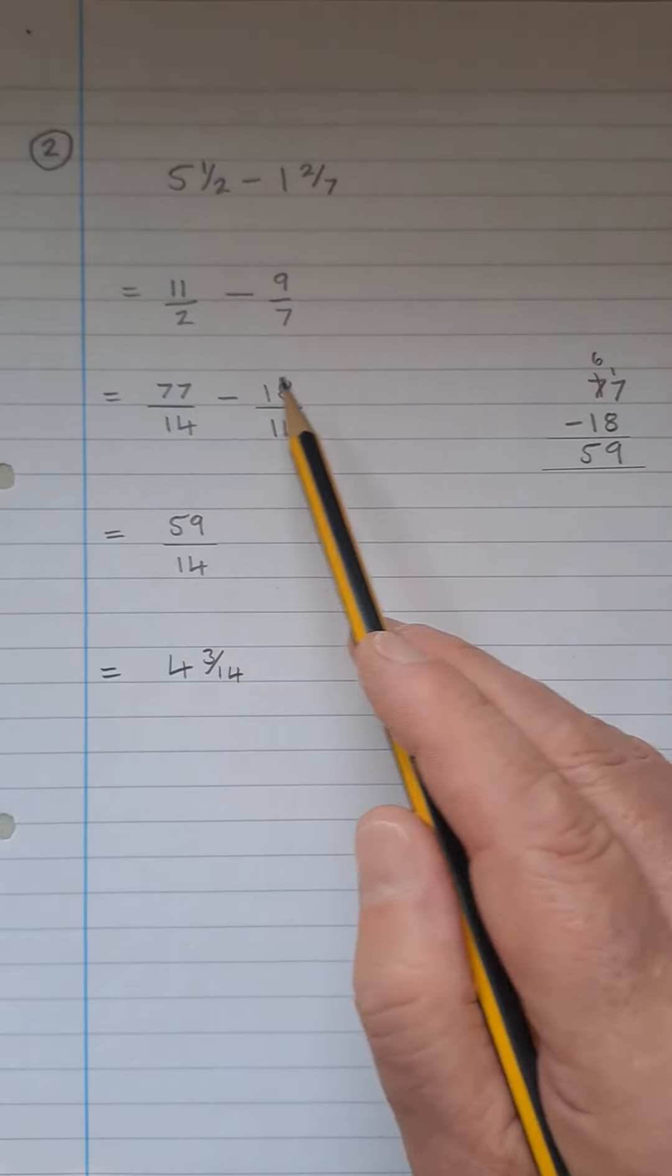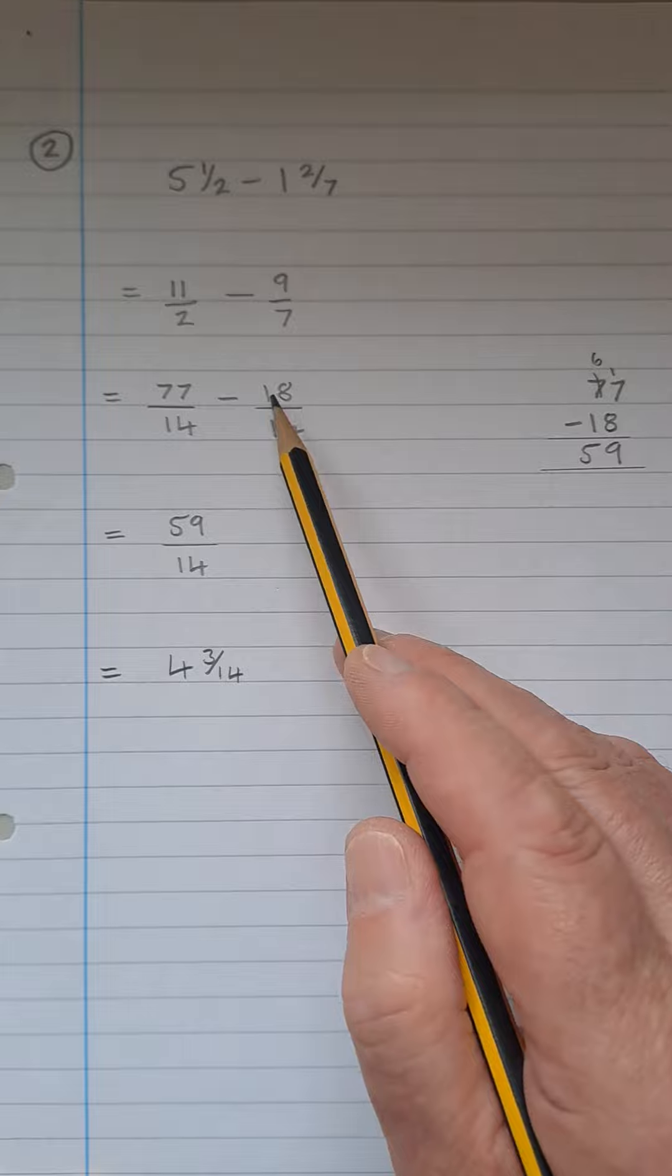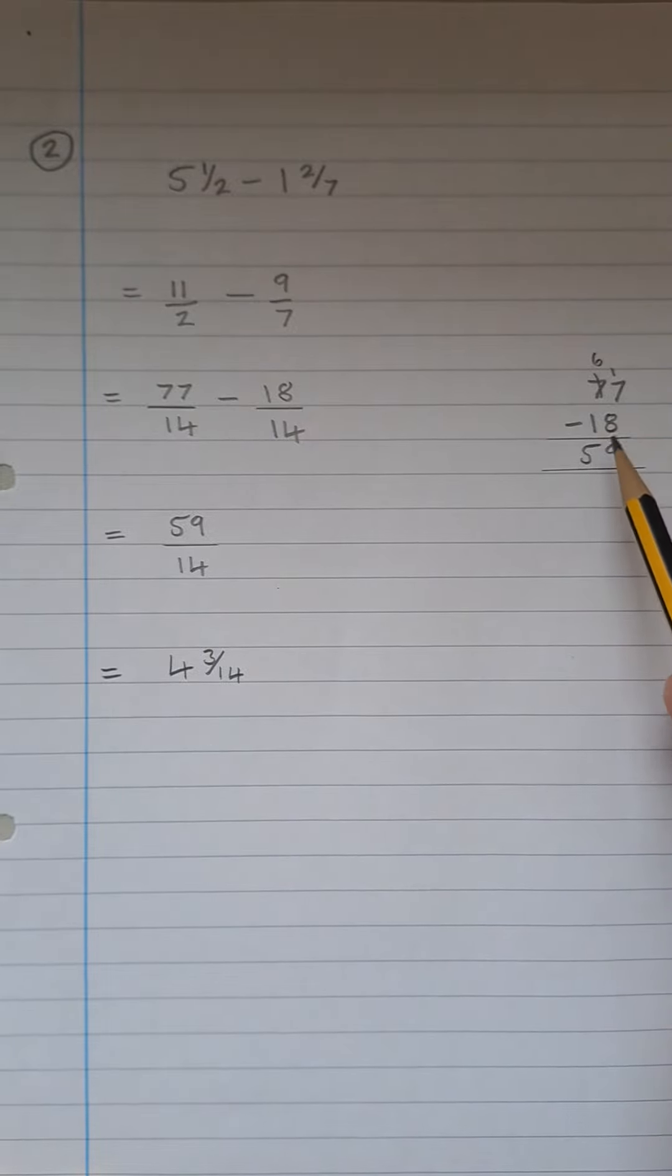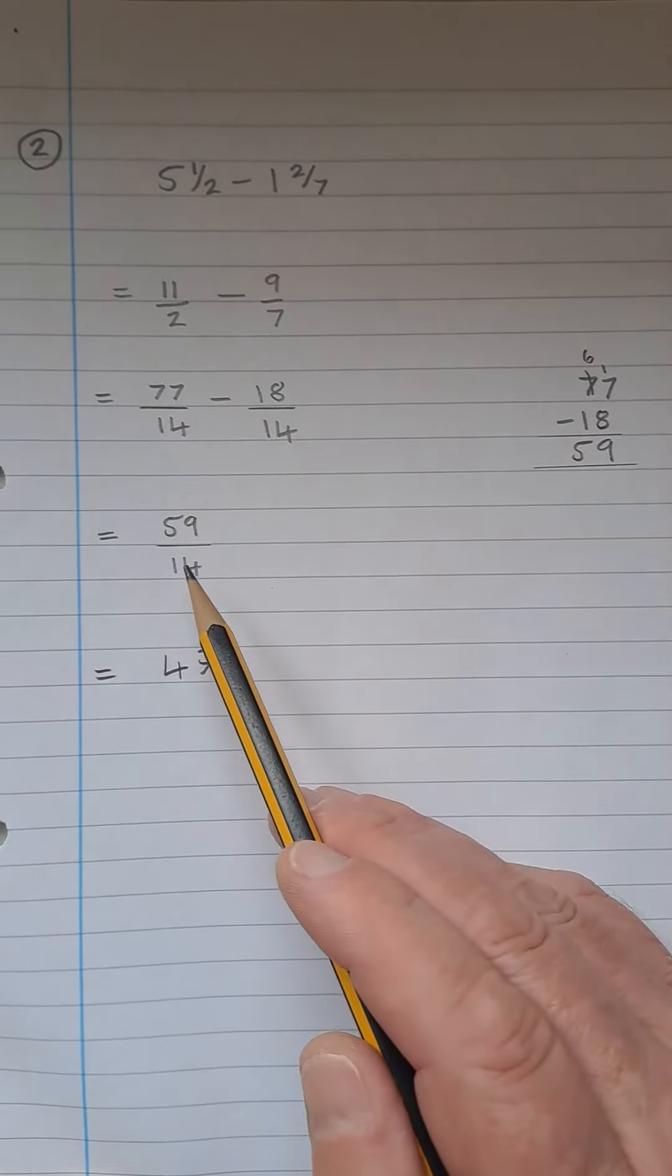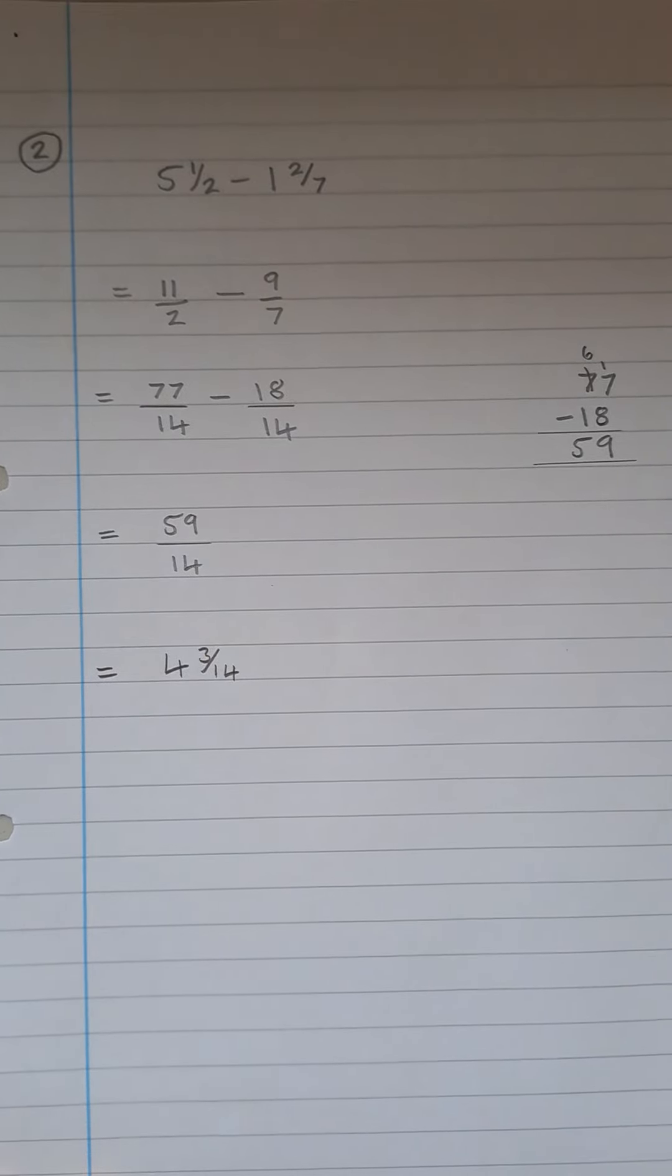77 take 18, you of course might manage to do that in your head. No problem doing a little chimney sum over here and then we have 59 over the common denominator of 14.